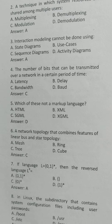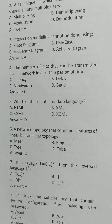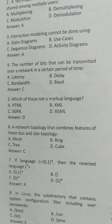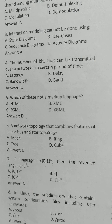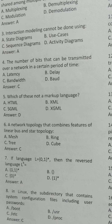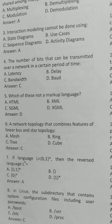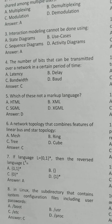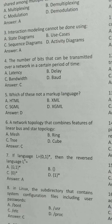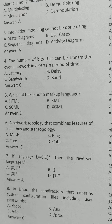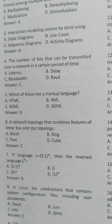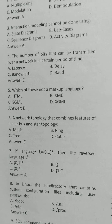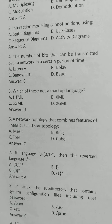Which of these is not a markup language? The correct answer is Option D, XGML. A network topology that combines the features of linear bus and star topology — the correct option is C, Tree topology.